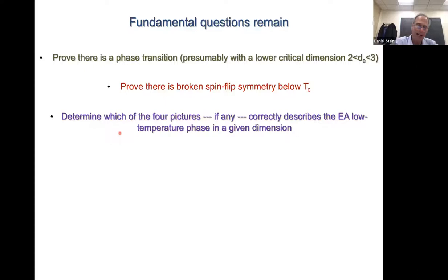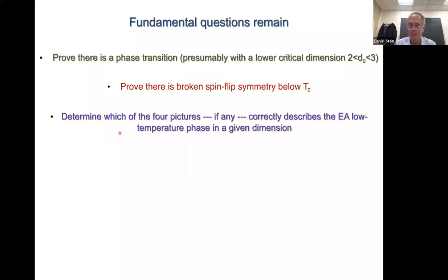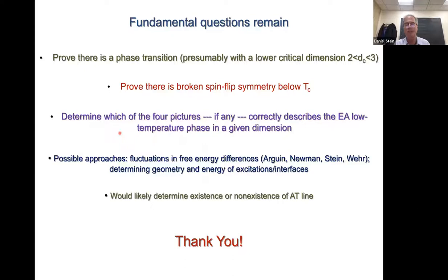You might have one picture holding in one dimension and another in another dimension; that's possible, or even at different temperatures in the same dimension — all of these things are possible. But anyway, figuring out what's going on at finite dimension and finite temperature in terms of the low temperature phase — we've narrowed it down considerably. I'll skip the AT line and stop here and thank all of you very much for your attention.